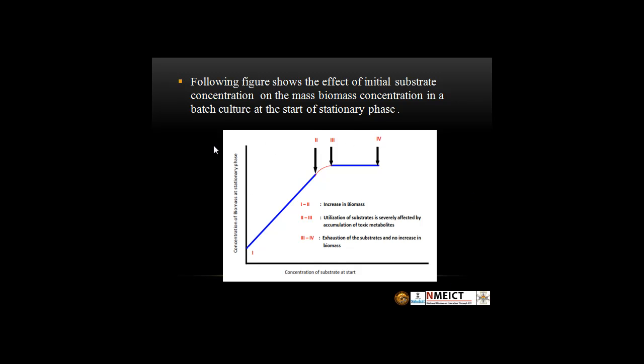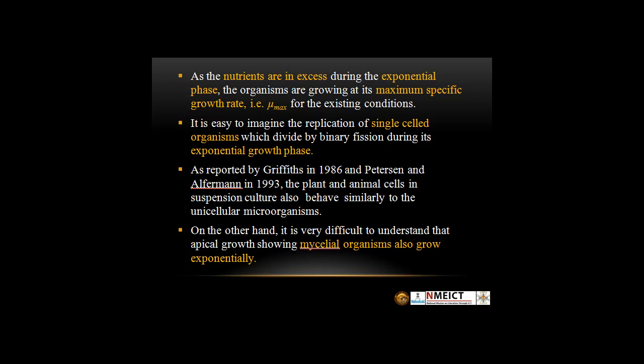This figure shows the effect of initial substrate concentration on the biomass concentration in batch culture at the start of the stationary phase. As the nutrients are in excess during the exponential phase, the organisms are growing at their maximum specific growth rate, that is mu max, for the existing conditions. As reported by Griffith in 1986 and Peterson and Alphaman in 1993, plant and animal cells in suspension culture also behave similarly to unicellular microorganisms. On the other hand, it is very difficult to understand the apical growth showing mycelial organisms, which also grow exponentially.